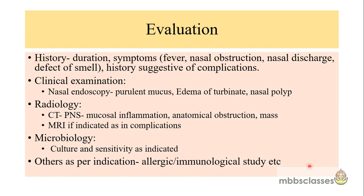Evaluation of chronic rhinosinusitis begins with history, where duration is the most important consideration — it determines whether the patient has acute or chronic rhinosinusitis. Symptoms to assess include fever, nasal obstruction, nasal discharge, and defects of smell. History suggestive of complications is also important as many cases may first present with complications. Nasal endoscopy is the most important examination and divides CRS into two groups: with polyp or without polyp. Other endoscopic findings include purulent mucus and edema of the turbinates.